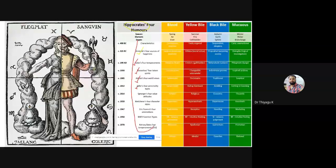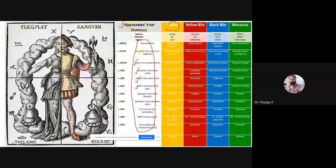Hippocrates debated people based on four humors or facial reactions. He coined the terms blood, yellow bile, black bile, and mucus. For each temperament, he also linked persons with some kind of seasons — spring is called blood, yellow bile is called summer season, black bile for the autumn season, and mucus for the winter season.